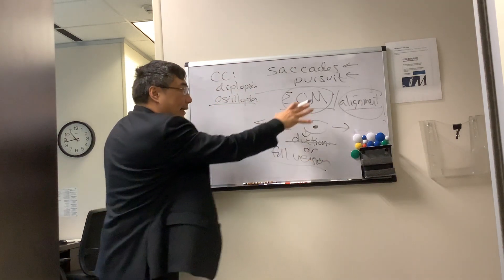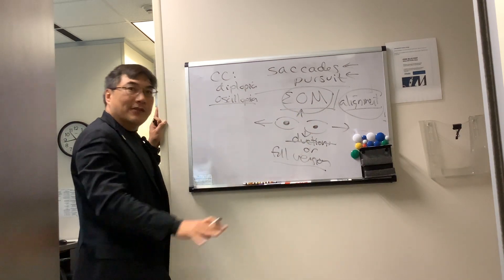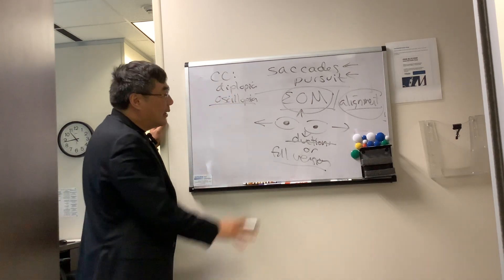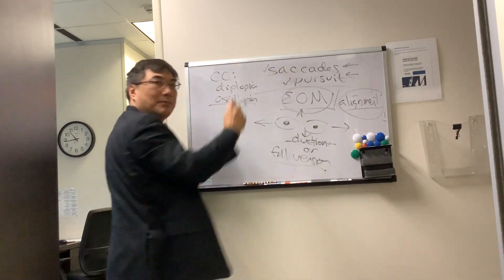Versions and alignment in the primary position are fine for screening, for normal people, for people who have complaints that have nothing to do with their efferent pathway. But once the complaint is efferent, then you have to test both the saccade and the pursuit.